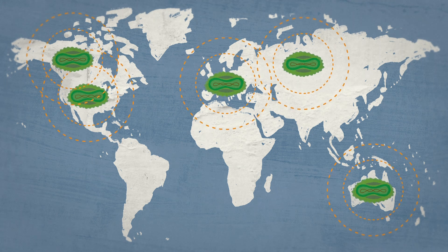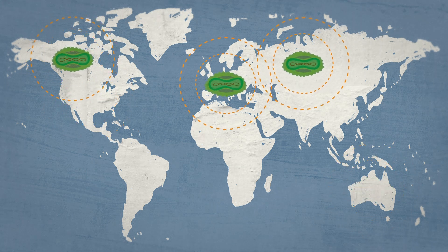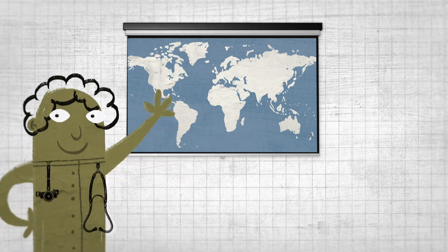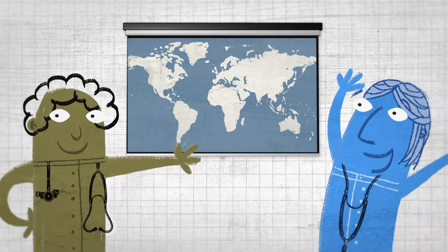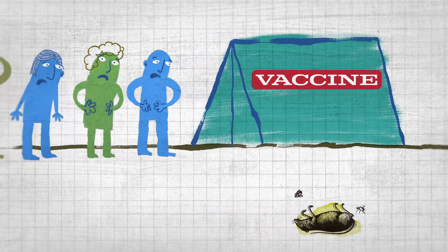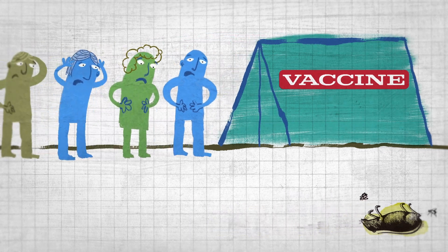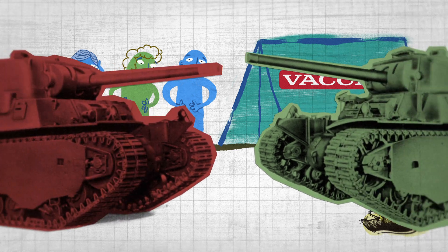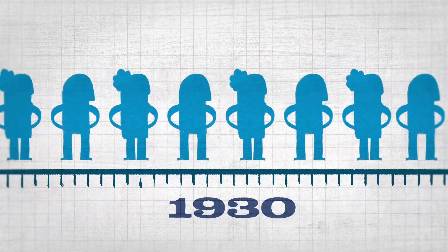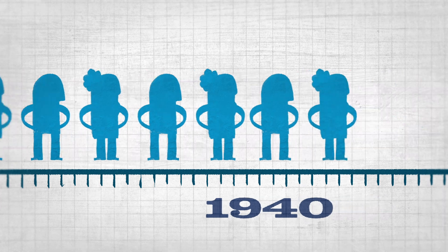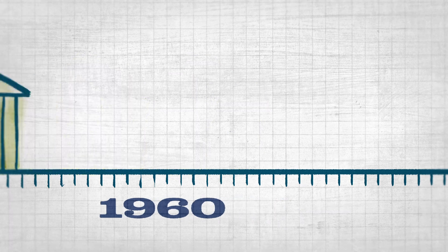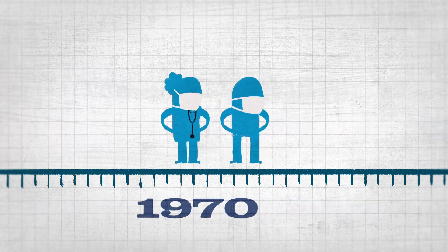Once this strategy had succeeded in ridding most industrialized countries from the disease, health officials realized that eradicating it worldwide was within reach. But this was not an easy process, proving especially difficult in places suffering from poor infrastructure or civil wars. The eradication effort took decades and involved millions of people working together, from world leaders and international organizations to rural doctors and community workers.